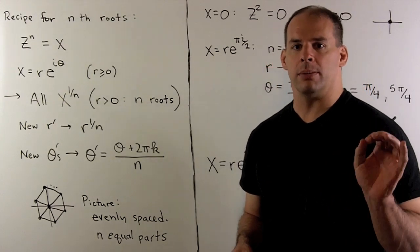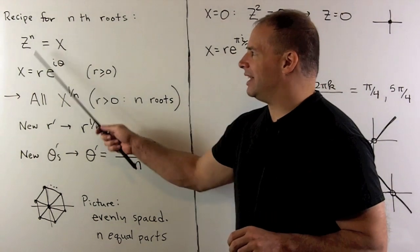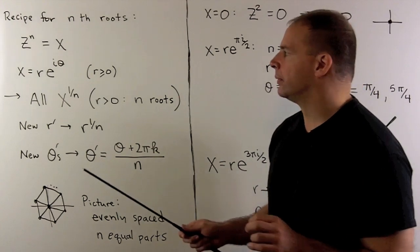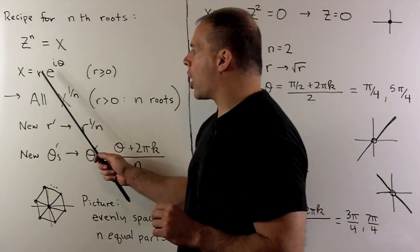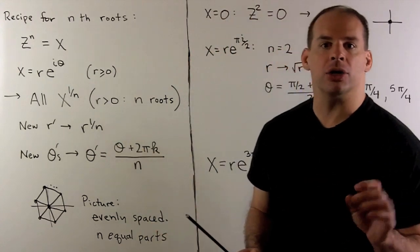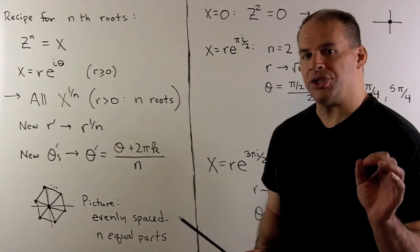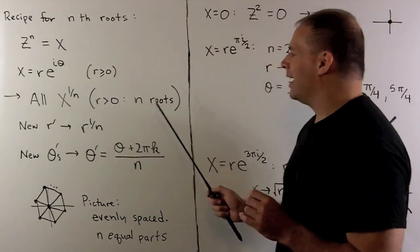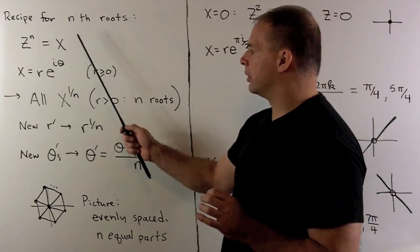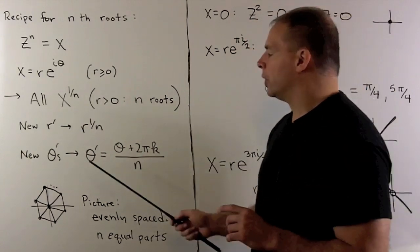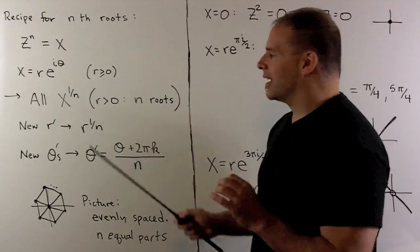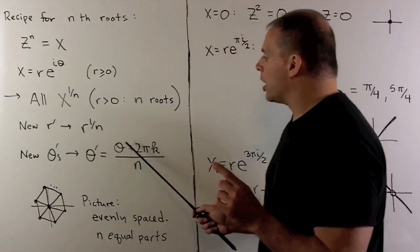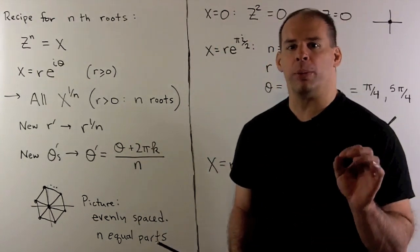Our recipe for nth roots comes from De Moivre's theorem. We're going to solve z to the n equals x, where n is a positive integer and x is a fixed complex number. We start by writing x equal to r times e to the i theta, where r is greater than or equal to 0. If r is equal to 0, we have only one solution, z equals 0. If r is positive, we're going to have n nth roots of x. The recipe we use: for the new moduli, take the old modulus and take its nth root. For the new arguments, take our old argument, divide by n, and then add integral multiples of 2 pi over n.